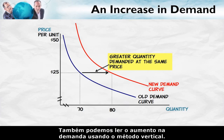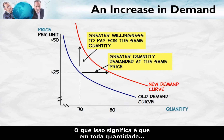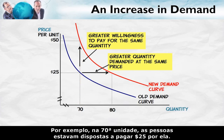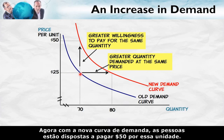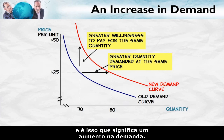We can also read an increase in demand using the vertical method. What that means is that at every quantity, there is a greater willingness to pay for that quantity. For example, for the 70th unit, people were willing to pay $25 for that unit. Now, with the new demand curve, people are willing to pay $50 for that unit. That's a greater willingness to pay for the same quantity, and this is what an increase in demand means.